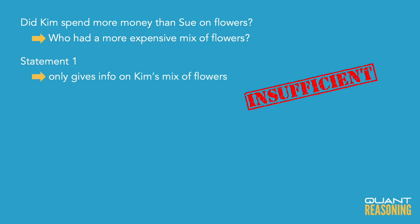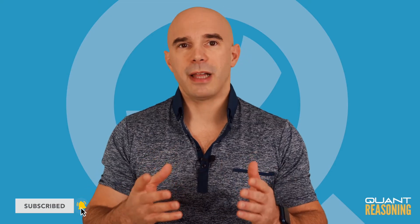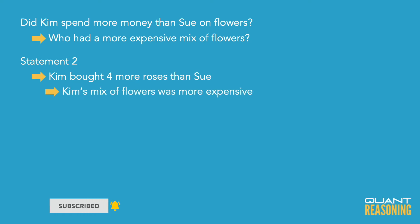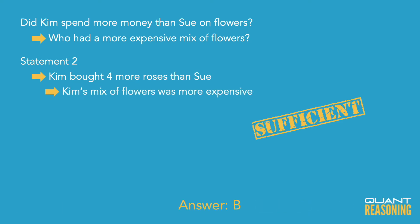On the other hand, statement two does tell us that Kim bought more roses than Sue did, and that necessarily means that Kim's mix of flowers was a more expensive mix. So we can say definitively that Kim spent more money on flowers than Sue did, and therefore the correct answer is B.